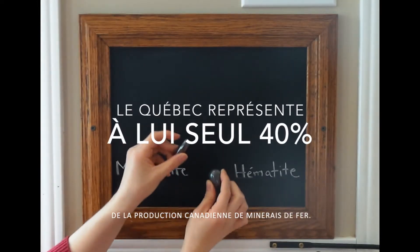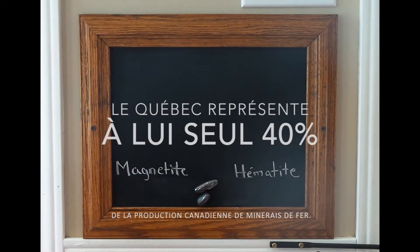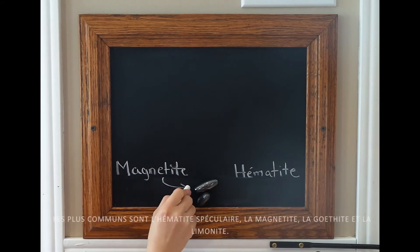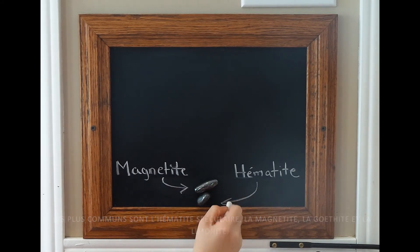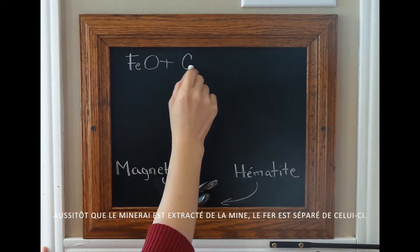Quebec is responsible for about 40% of Canada's iron production. Several iron ores are found in Quebec, namely specular hematite, magnetite, goethite, and limonite. Once the ore is mined, the iron must be extracted.